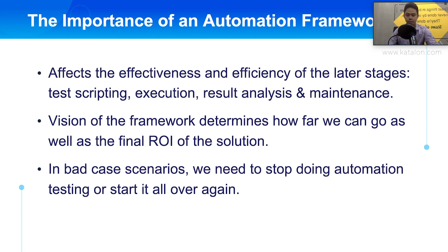If we do something wrong in the automation framework, all the activity of the team will be affected, especially the maintenance step, because the effort for maintenance will become bigger and bigger over time. The vision of the framework also determines how long we can carry on the solution with our project and affects the final return on investment. If you only have 20 or 50 test cases, it doesn't matter much. But when you have 100 or 1000 tests, you will see how the automation framework plays its role. If you don't have a good automation framework in the beginning, you might end up with explosive maintenance efforts, which eventually stops automation testing because it no longer meets your delivery needs.